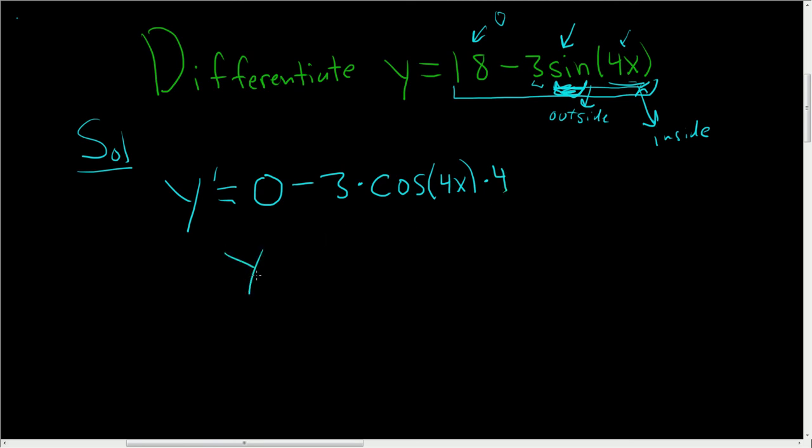So let's just clean it up. y prime - by cleaning it up, I mean put the numbers out front. So 4 times negative 3 is negative 12, and then you end up with cosine 4x. Really simple example of using the chain rule.